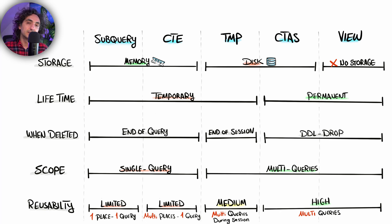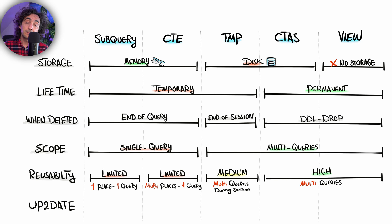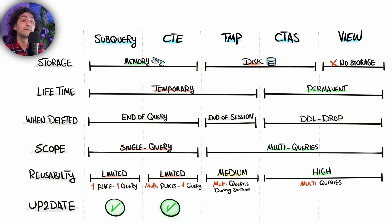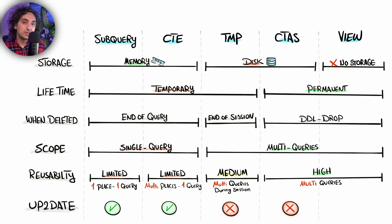The next consideration is how fresh the intermediate result data is — is it always up to date? Subqueries and CTEs are always up to date because SQL executes the logic on the fly, stores data in memory, and then the main query immediately retrieves it. But for temporary tables and CTAS, the query is only executed once. If there are updates or changes on the original table afterward, those changes will not be reflected in those objects.